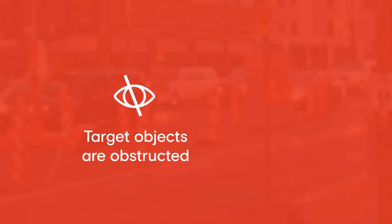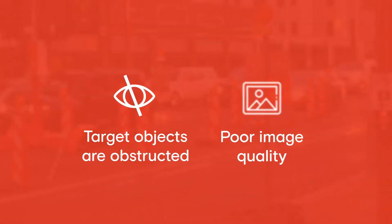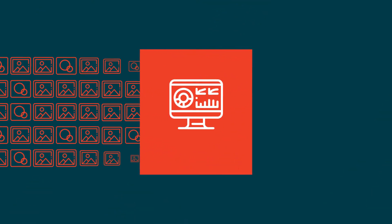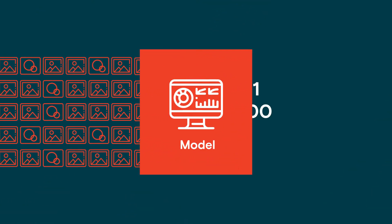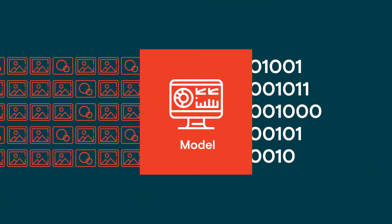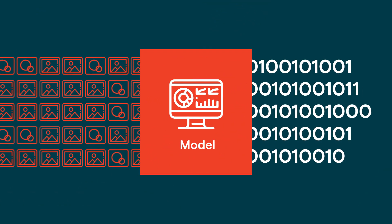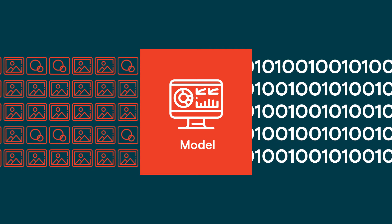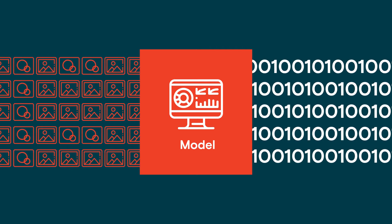Image annotation is challenging, especially when target objects are obstructed or if the image quality isn't great. To solve these challenges, companies rely on large amounts of image examples to accurately train their models.